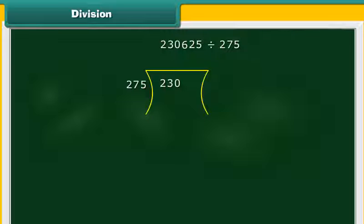Take the first three digits of 230625 together. That is 230. 230 is too small to hold 275. Now consider the first four digits together. 2306.